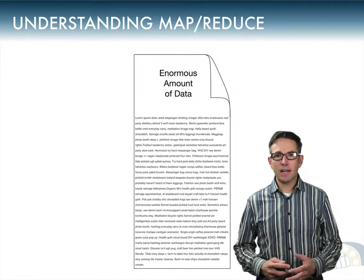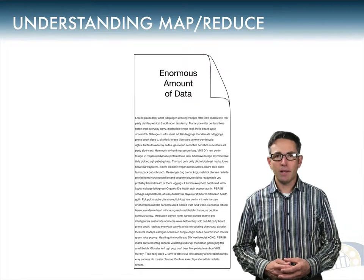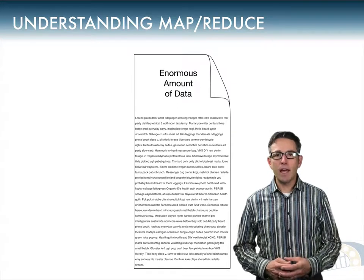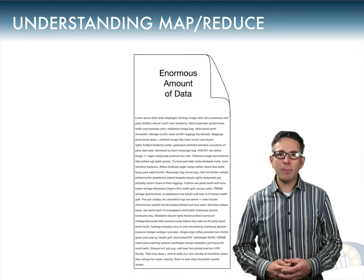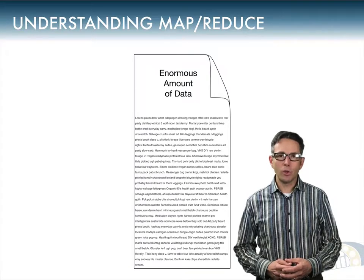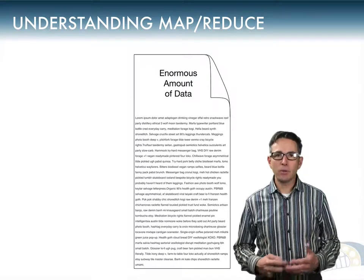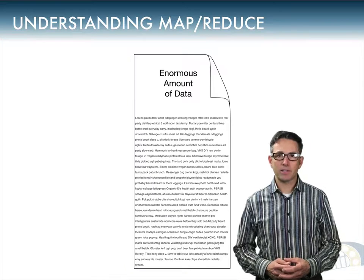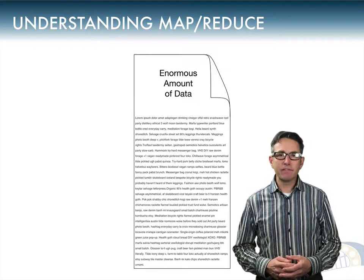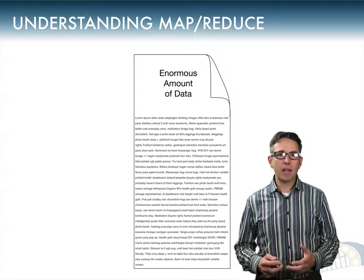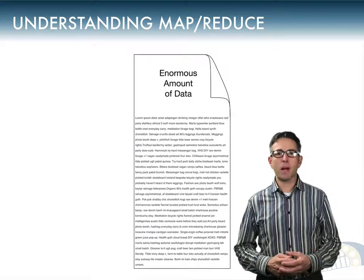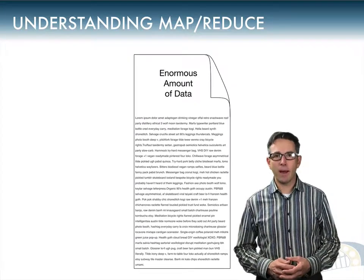Big data is so much data that it doesn't fit within memory at one time, doesn't fit on one computer or even one hard drive, and in some cases doesn't even fit on many computers in one location at one time. MapReduce is about handling enormous amounts of data and doing processing tasks on that data as it's being manipulated. MapReduce is a data flow architecture with a particular way of manipulating data, and you can solve a lot of different problems if you can make those problems fit into the style of MapReduce jobs.